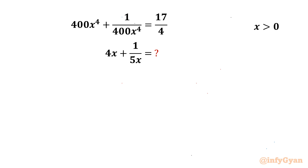Welcome to Infigyan, my dear friends. In this video we are going to take up one very interesting algebraic puzzle. We have to evaluate the expression 4x plus 1 over 5x, given the equation 400x⁴ plus 1 over 400x⁴ equals 17 over 4, and x is a positive number.